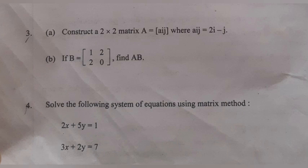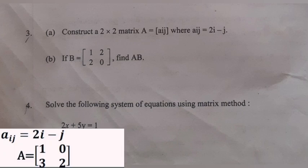Question 3A: Construct a 2×2 matrix A = [aij] where aij = 2i − j. Question 3B: Find A − B.